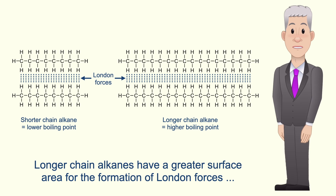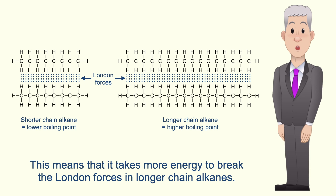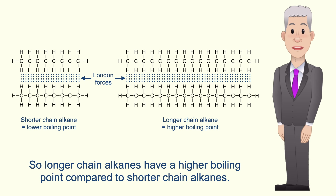Longer chain alkanes have a greater surface area for the formation of London forces compared to shorter chain alkanes. This means that it takes more energy to break the London forces in longer chain alkanes, so longer chain alkanes have a higher boiling point compared to shorter chain alkanes.